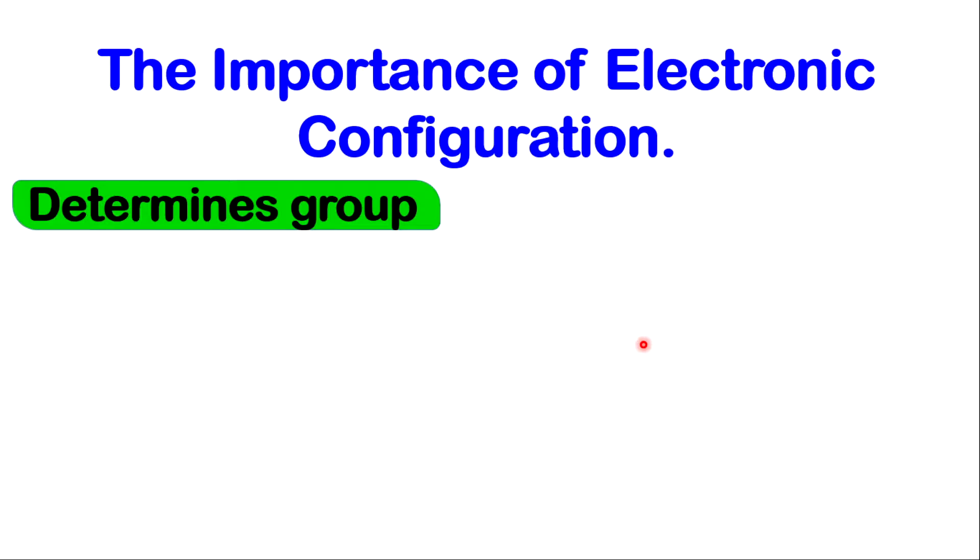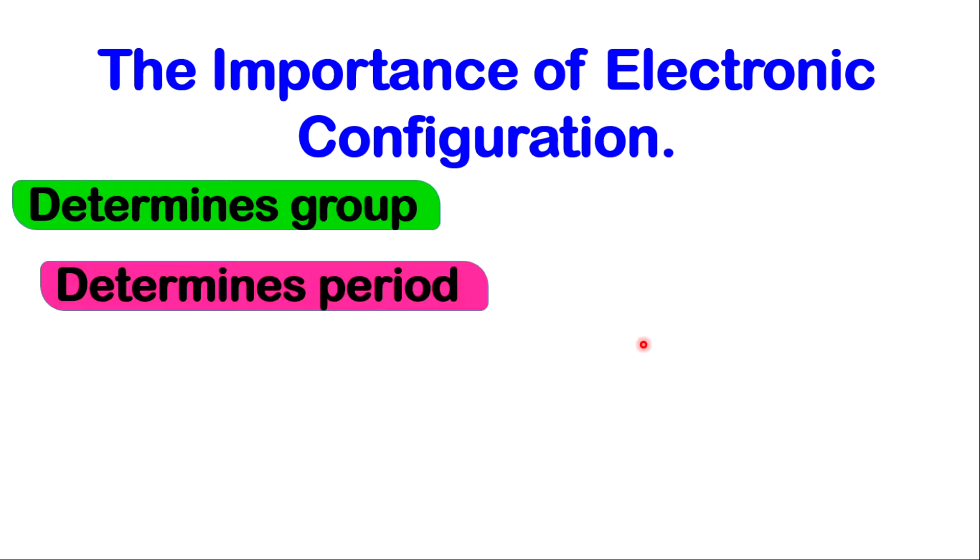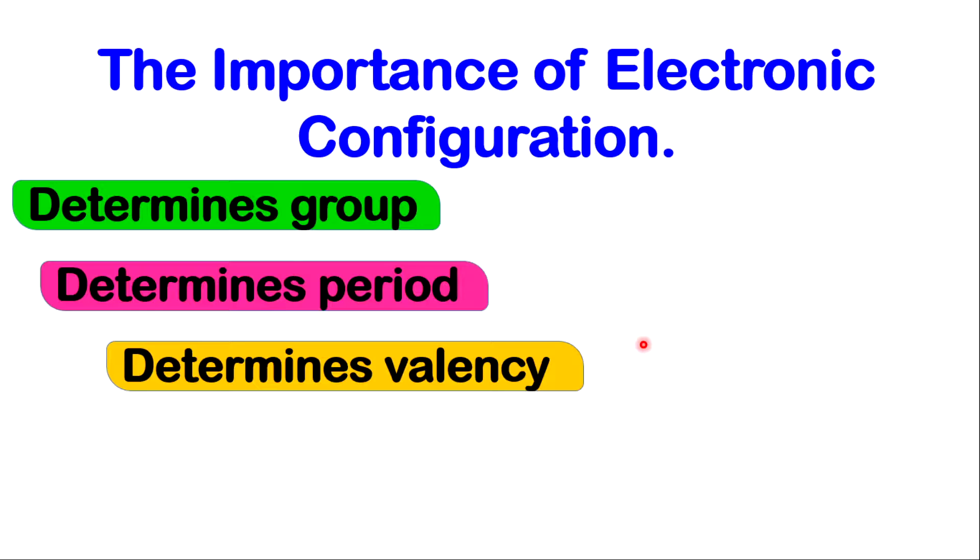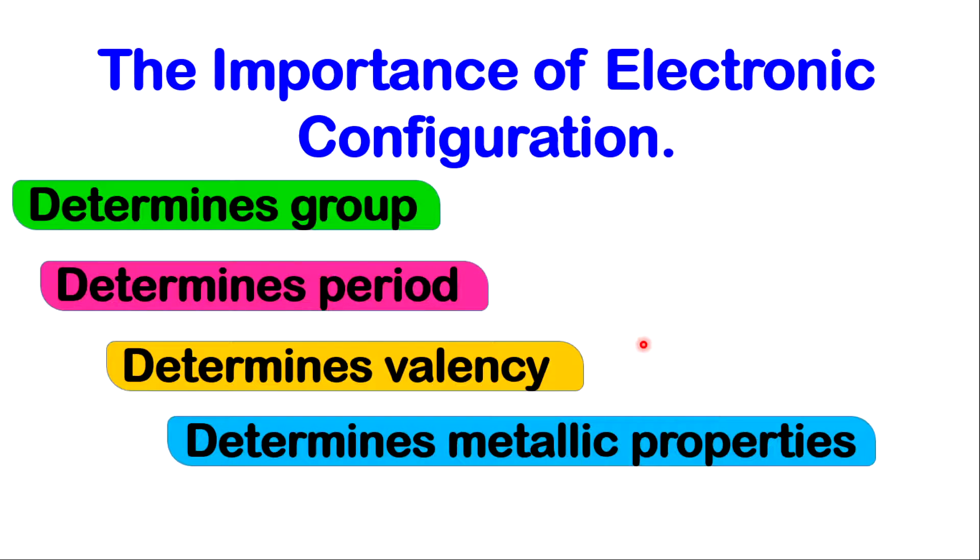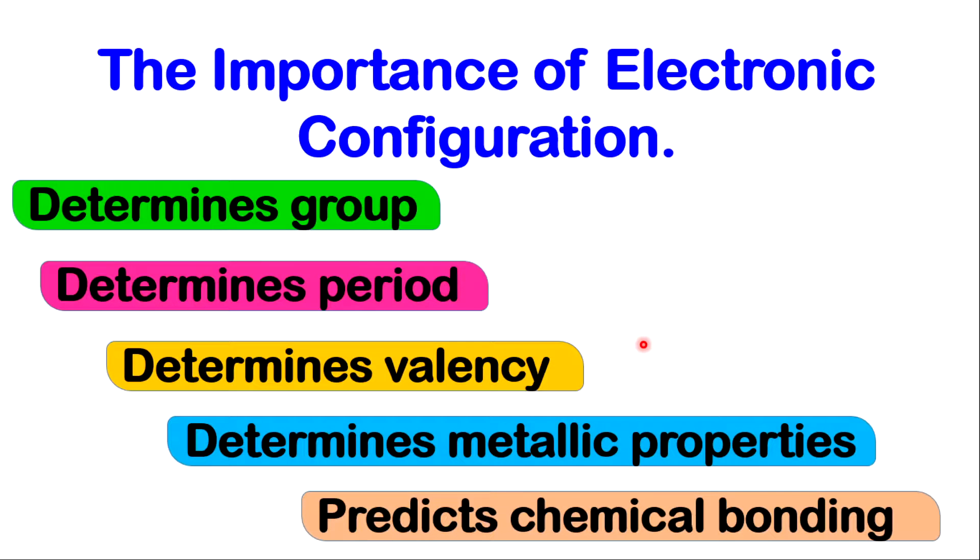To know electronic configuration, first, you can determine the group that you can place the element in. It can help you to determine the period you place the element in. You can also use it to determine the valency of elements. You can use it to determine metallic properties, to determine if the element is a metal or a non-metal. You can also use it to predict chemical bonding or chemical reactions that the element can take place in. And there are other chemical properties or behaviors that you can use the electronic configuration to determine.